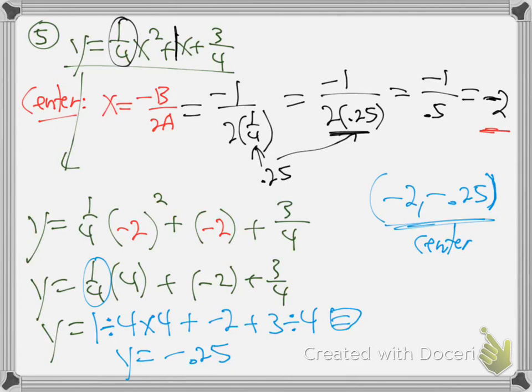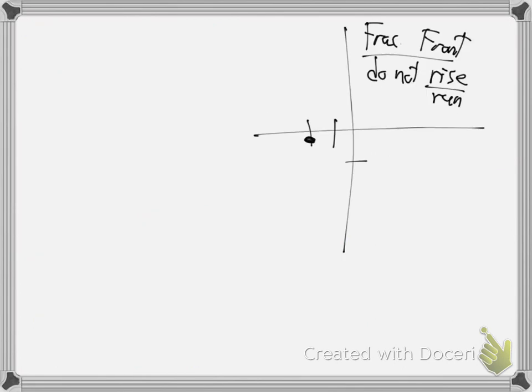So y equals one-fourth x squared plus x plus three-quarters, and you put in zero there for y. Zero equals one-fourth x squared plus x plus three-fourths. That's a pain. What do we do with fractions when we have an equal sign? Get them out of there - multiply through by 4. We've done this before - multiply through by 4. Cancel, cancel. Zero times 4 is zero, equals x squared plus 4x plus 3. See how much better that is?